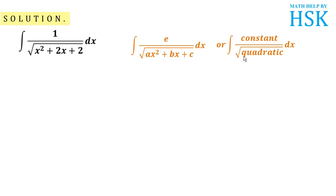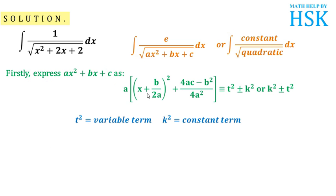So if we have to integrate a function which is in the form of constant upon under root of quadratic, we have to perform this step: we express ax squared plus bx plus c — the term inside the radical sign — as a times (x plus b upon 2a) whole squared plus (4ac minus b squared) upon 4a squared. You don't have to learn this expression; you just have to understand how to express the quadratic expression ax squared plus bx plus c. This expression is to be written as t squared plus or minus k squared, where t squared is a variable term and k squared is a constant term.